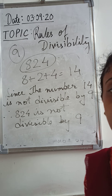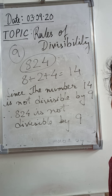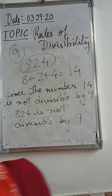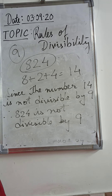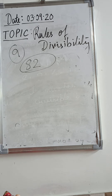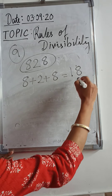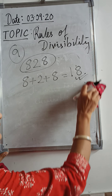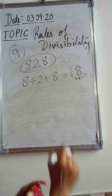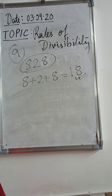You can test other numbers at home as well — it is very helpful for bigger numbers where you don't want to divide and check. Now let's take 828. Adding the digits: 8 + 2 + 8 = 18. Since 18 comes in the table of 9, it is divisible by 9. Therefore, 828 is also divisible by 9. This was the test for 9.